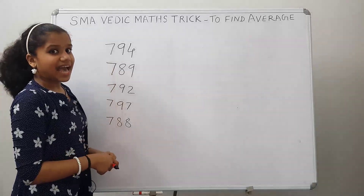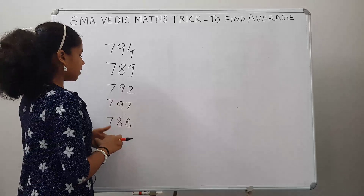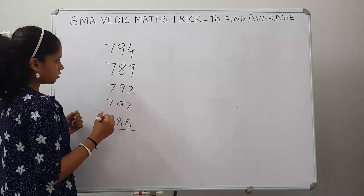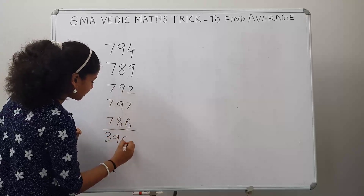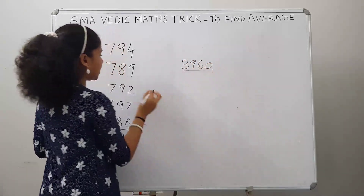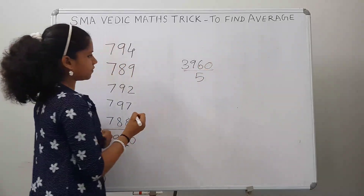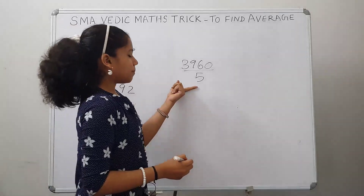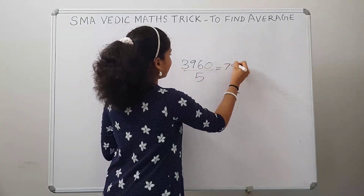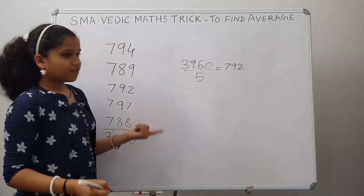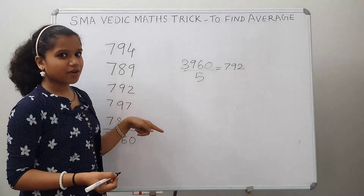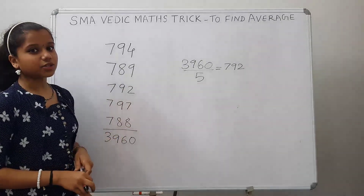The sum of these numbers is 3960. Now we have to divide it by the number of terms. There are 5 numbers, so divided by 5. So 3960 by 5 is 792. With the normal method, it is a bit difficult to find the sum and then divide by the number of terms. So let's see how to do it using the Vedic Math trick.